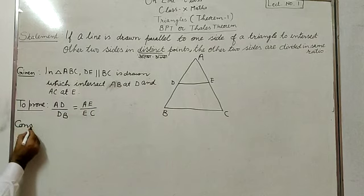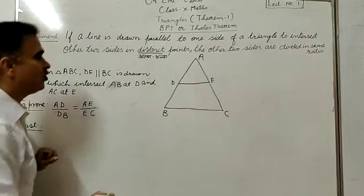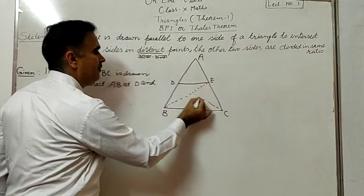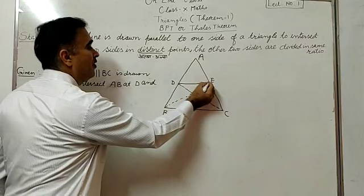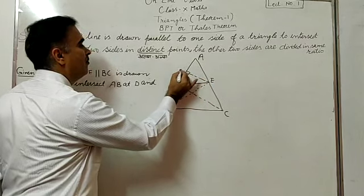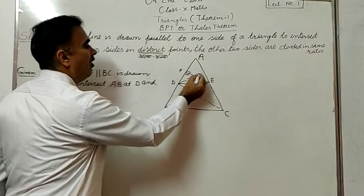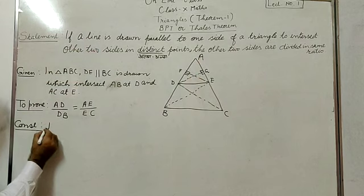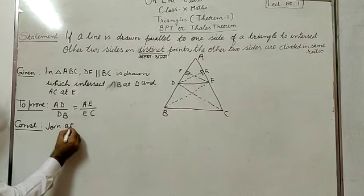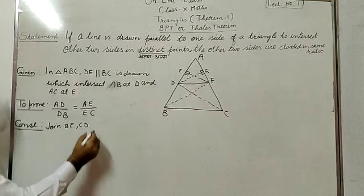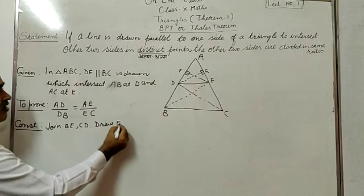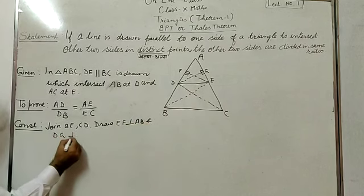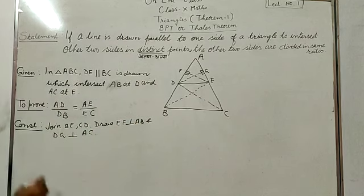Here is the construction to prove this — this is a very important part. Join BE and CD, and draw EF perpendicular to AB and DG perpendicular to AC. Construction: join BE, CD, draw EF perpendicular to AB and DG perpendicular to AC.